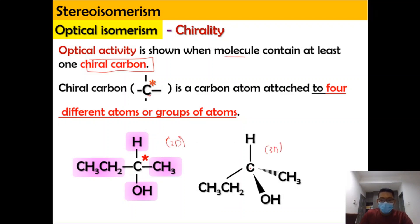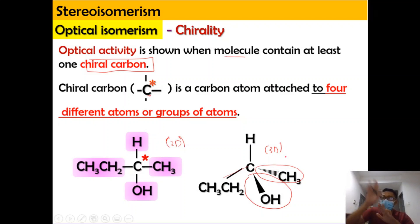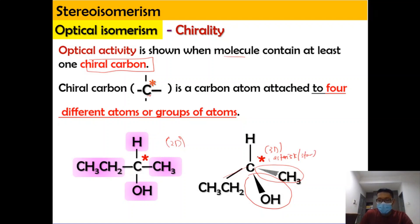You can convert the 2D structure to 3D by maintaining CH in plane — so two bonds are in-plane. OH is out of plane, drawn with a bold thick wedge meaning it comes out of the plane. The methyl group is below the plane, drawn with a dashed line — behind the plane. This chiral carbon is also labeled with a star or asterisk (A-S-T-E-R-I-S-K), which indicates it is a chiral carbon.